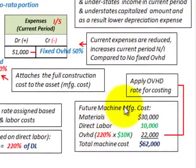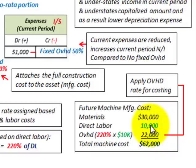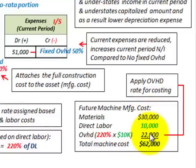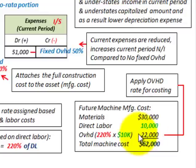For a future machine example, say we have materials of $30,000 and direct labor of $10,000. We apply our overhead rate of 220% times $10,000 direct labor, giving us an overhead cost of $22,000. Totaling materials, direct labor, and assigned overhead, we get a total machine cost of $62,000. That's typically how you handle a self-constructed asset — establish an overhead rate based on direct labor dollars and apply it to come up with your total cost.